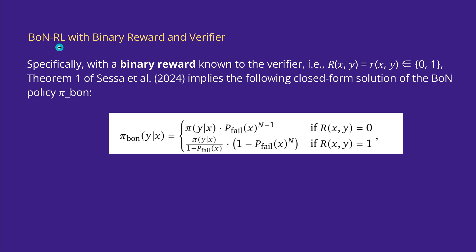if you say I want my reinforcement learning with a binary reward and a verifier, we have a further simplification with a binary reward known to the verifier. This is simply between 0 and 1. The theorem implies the closed form solution of this particular case.